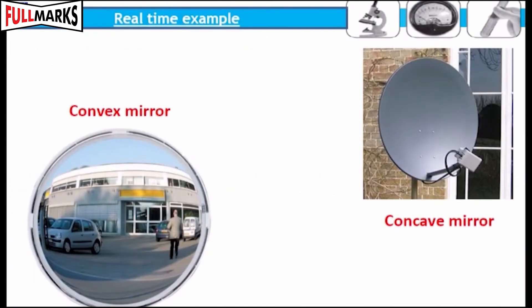Real-time examples: Concave mirrors are commonly used in torches, search lights, and vehicle headlights to get powerful parallel beams of light. Convex mirrors have a wider field of view and are therefore used as rear-view mirrors.